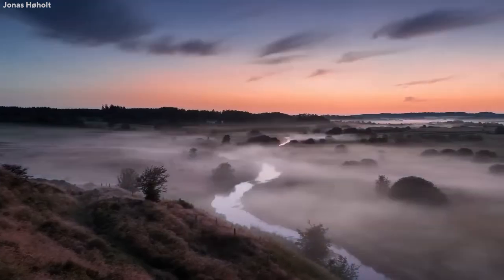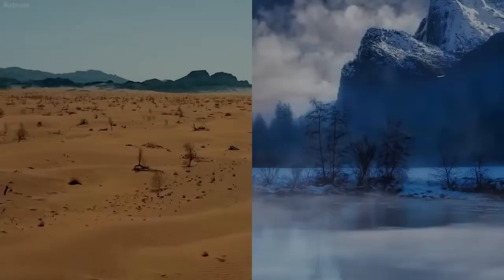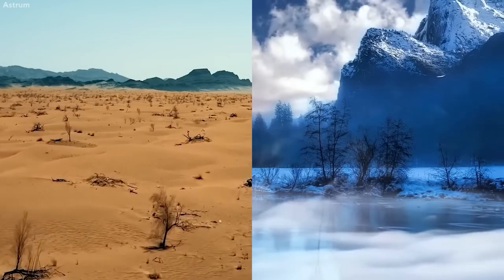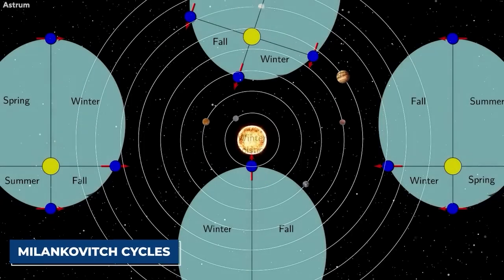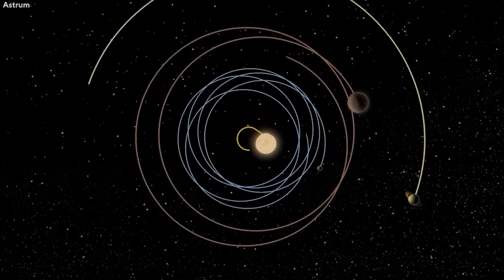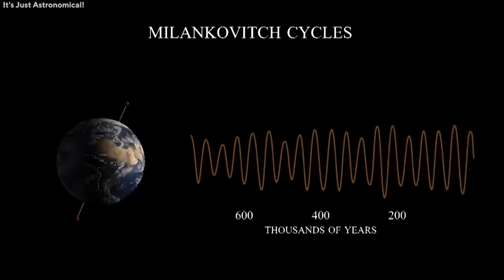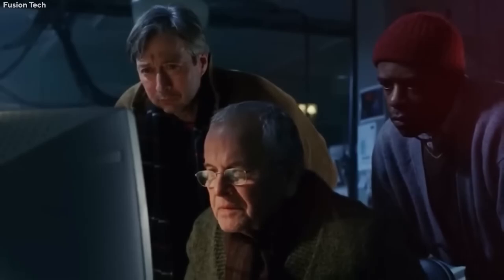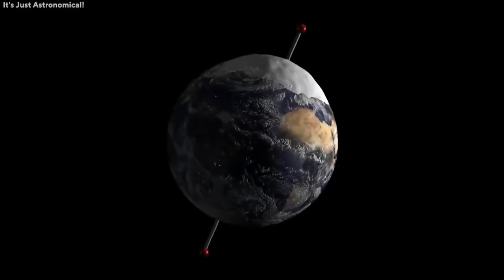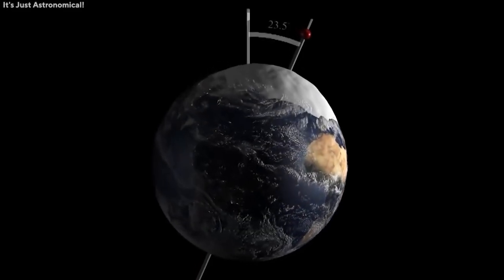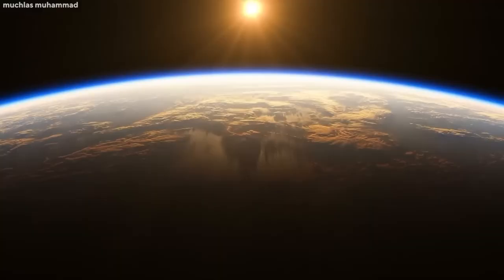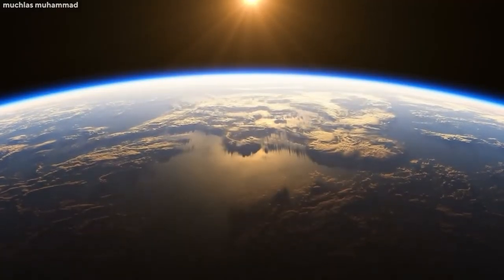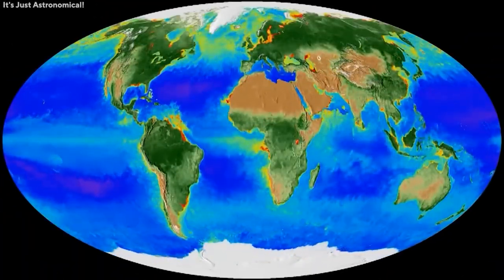Seasons are in a yearly cycle, but there are actually longer cycles that affect a planet's weather significantly. These are known as Milankovitch cycles. Milankovitch cycles are periodic changes in a planet's orbital characteristics that control how much sunlight it receives over hundreds of thousands of years, affecting its climate and habitability.